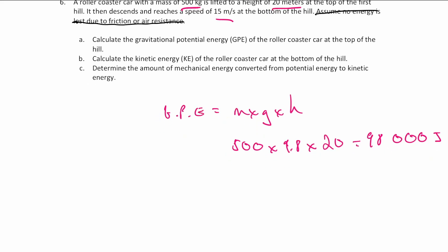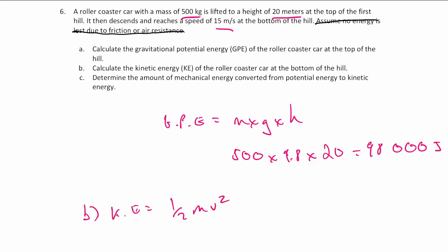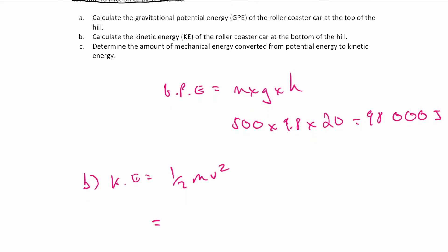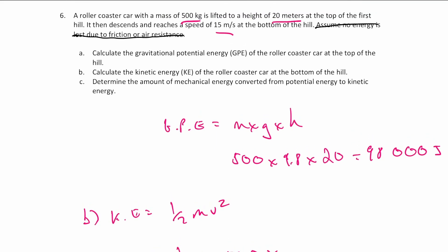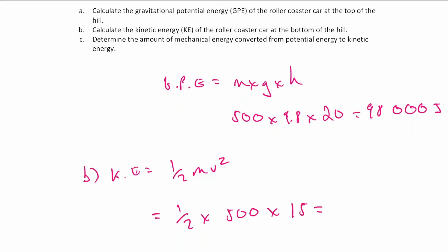For part B, we work out the kinetic energy at the bottom of the hill using KE equals a half mv squared. If no energy was lost, all gravitational potential energy would convert to kinetic energy. We do a half times 500 times 15 — the speed at the bottom is 15 meters per second. So half times 500 times 15 gives an answer of 3,750 joules of kinetic energy.